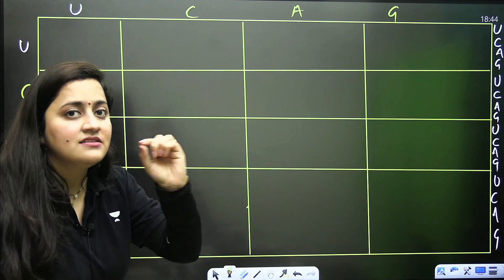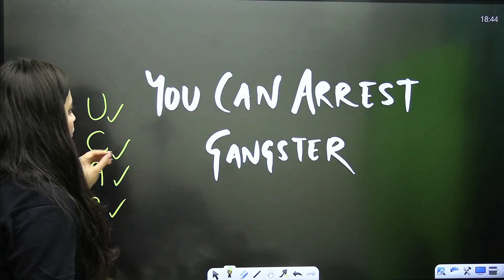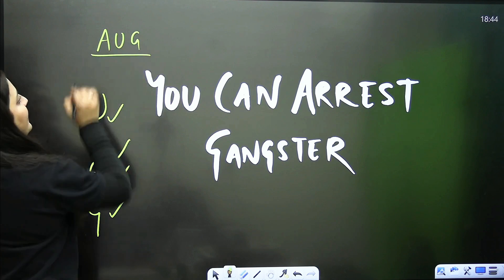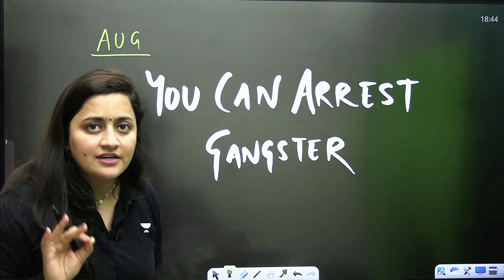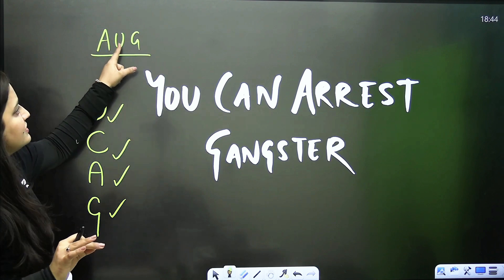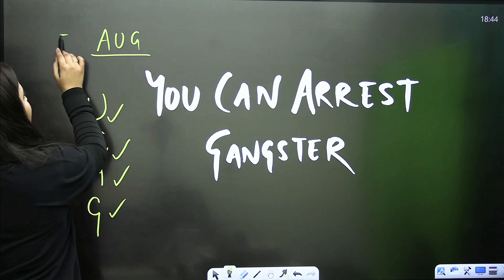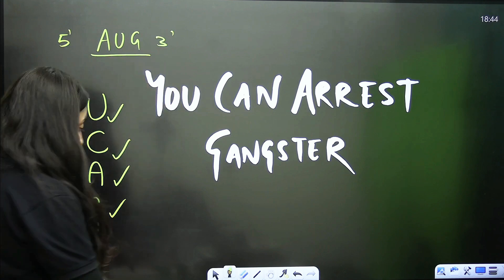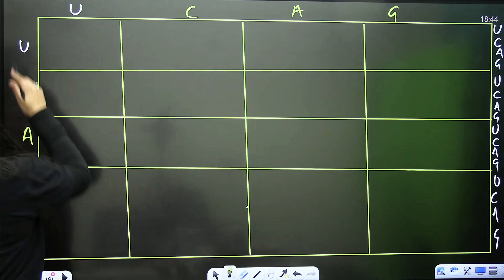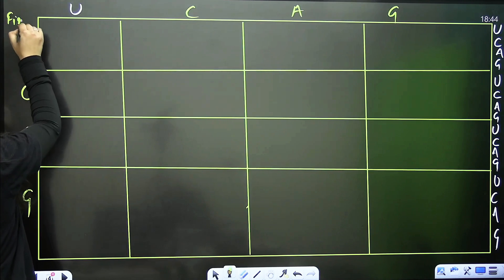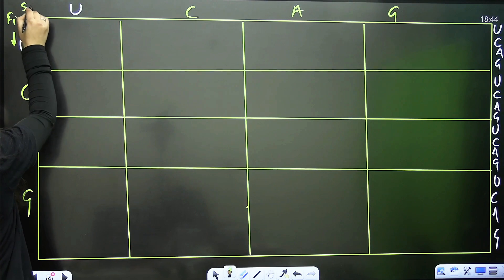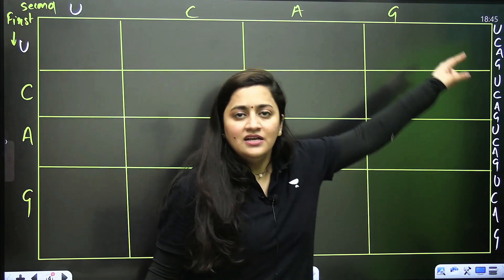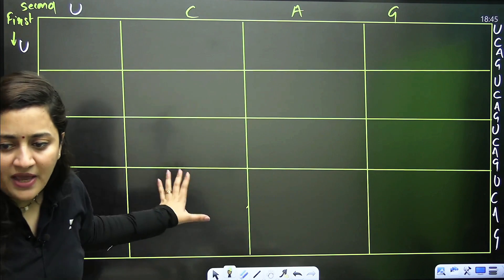These sides tell us the position of the base. Your codon is a triplet base codon — first position, second position, third position — and we read them in the 5' to 3' direction. This particular side tells us the first base position, this side tells the second base position, and the third side is about the third base.